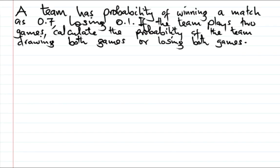Let's see the solution of this problem. It's about probability. The question says a team has a probability of winning a match of 0.7 and losing of 0.1. If the team plays two games, we should calculate the probability of the team drawing both games or losing both games.